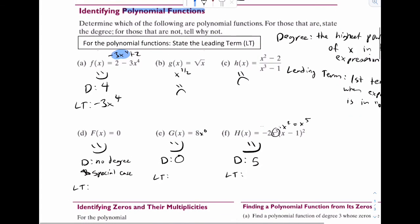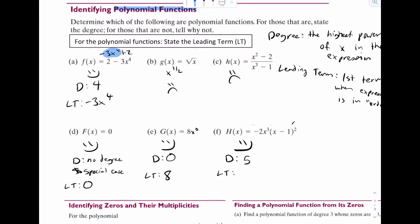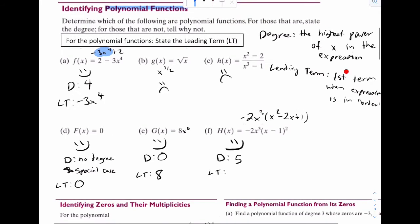So for D and E, not much you can do, so just write zero and eight. And then F is the cool one, because you can actually multiply it out to really see it. That'd be negative 2x to the third times x squared minus 2x plus one. If you're going to multiply this whole thing out, we could multiply everything like this, but we just care about the first term in order, which means you just want to think about what happens when you multiply these two. And you're going to get negative 2x to the fifth. And that would be your leading term.